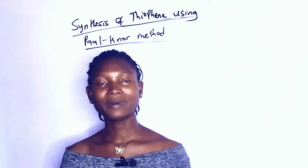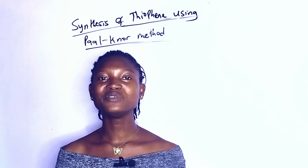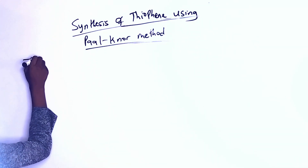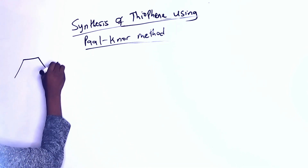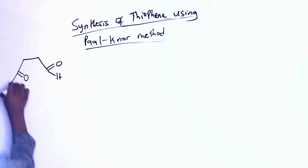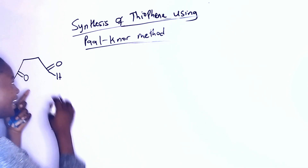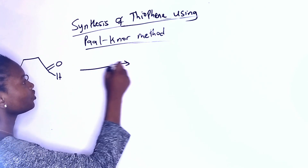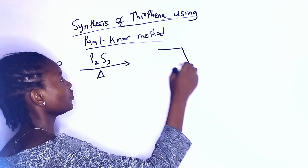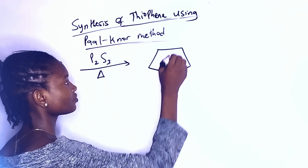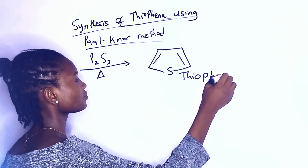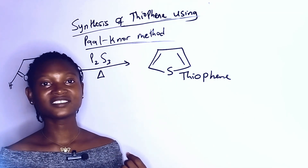In my last video I said when you are using the Paal-Knorr method, our starting material would be a 1,4-dicarbonyl compound. In this case I'm using a 1,4-dialdehyde, and in the presence of P2S5 it is going to give us thiophene. This is just the reaction scheme.